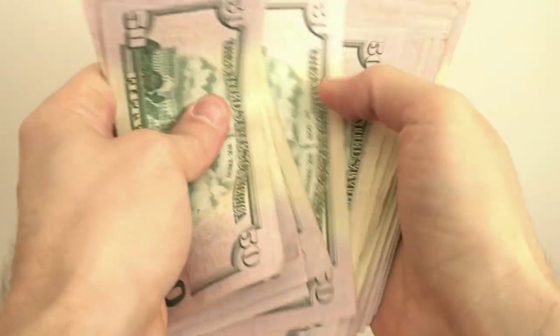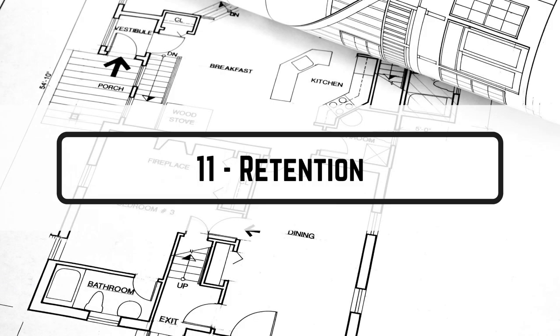Term number ten is progress payments — the payments made during execution depending on the progress of work. In the contract you should agree the time of payment: weekly, bi-weekly, monthly, or milestones. You also need to agree the certification time, meaning from the date the payment application is submitted, how long is needed to certify the payment and issue the payment certificate.